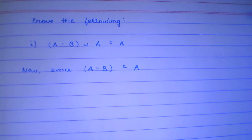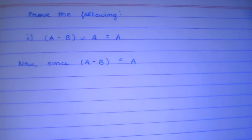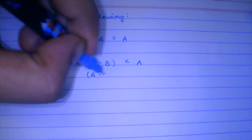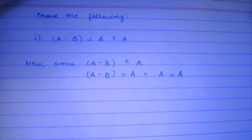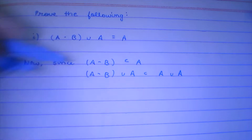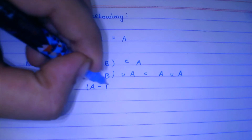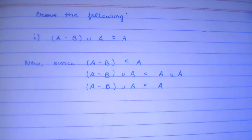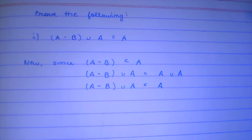Since A minus B is a subset of A — that is actually very obvious — A minus B has to be a subset of A. Further, A minus B union with something is also going to be a subset of A union that something. In this case, that something is A itself, so A minus B union A is a subset of A, because A union A is A itself.